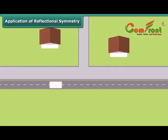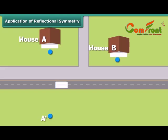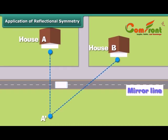A milkman wants to park his van at some point on a street and distribute milk to houses A and B. Can you suggest where he should park his van so that his walking distance from the street to houses A and B will be least? We can use reflectional symmetry here. Let A' be the image of A in the mirror line, which is the street. Now join the points A' and B. At point P, the mirror line and A'B meet. Thus, point P is the ideal place for the milkman to park his van.